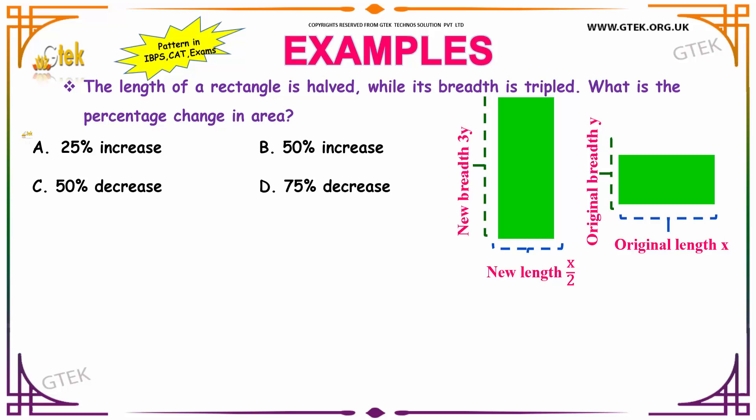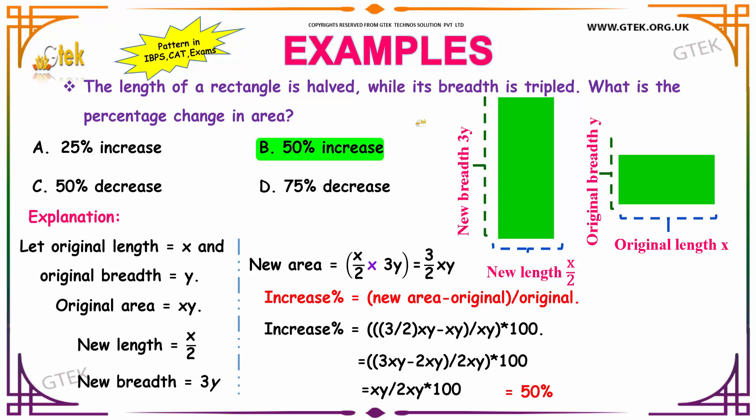Our options are given to be A: 25% increase, B: 50% increase, C: 50% decrease, and D: 75% decrease. What will be the answer? Let us see how to solve this.